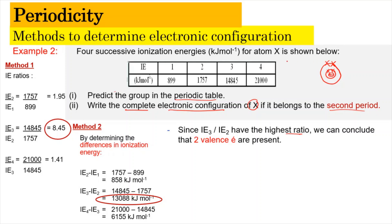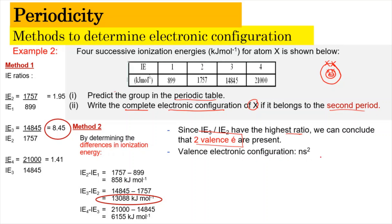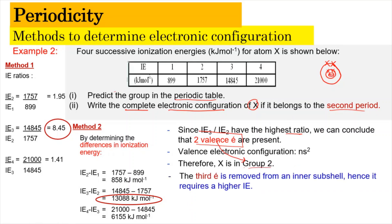Since IE3 to IE2 has the highest ratio, we conclude there are 2 valence electrons. The first and second electrons require only small amounts of energy to remove, but the third electron requires very high energy as it comes from the inner shell. Therefore, the valence electronic configuration is Ns2, and atom X is in Group 2.